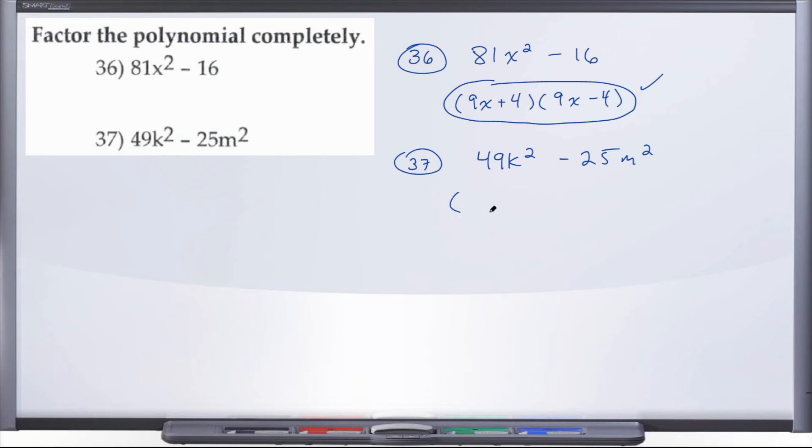In fact, we are. 49 is a perfect square, 25 is a perfect square. Let's create our two sets of parentheses. What is the square root of 49? It's 7 and 7, and we're dealing with a k, so k and k. What is the square root of 25? It's 5 and 5, and we're dealing with an m, so m at the end. Then just like before, all we do is say plus and minus, and we have our factored form: (7k + 5m)(7k - 5m).